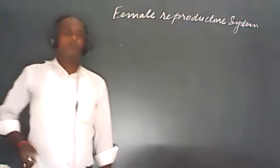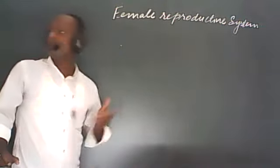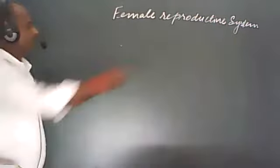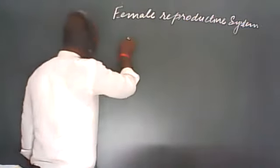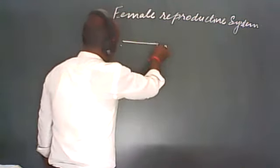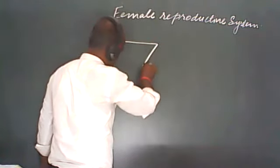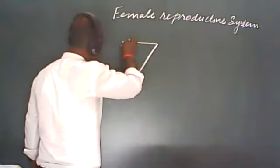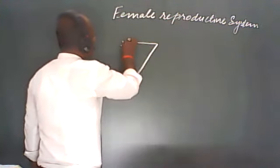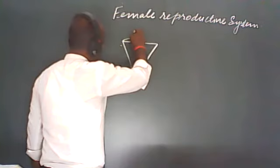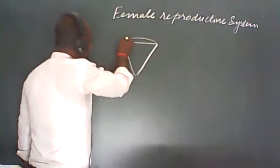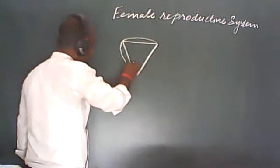Today we will study about the different parts of the female reproductive system. We will draw the figure of the female reproductive system, because with the help of a figure we can understand very easily. First of all, to draw the female reproductive part, draw a line — you have to draw a triangle-like structure. This monologue-like structure will help you to draw. After that, there should be a curved line type of structure from the upside, forming an outline diagram.